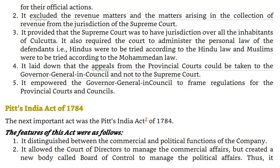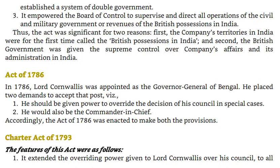Pitt's India Act of 1784. Its features were: 1. It distinguished between the commercial and political functions of the Company. 2. It allowed the Court of Directors to manage commercial affairs but created a new body called the Board of Control to manage political affairs, thus establishing a system of double government. 3. It empowered the Board of Control to supervise and direct all operations of the civil, military, and revenue affairs of British possessions in India. Thus, the Company's territories were for the first time called 'British possessions in India,' and the British government was given supreme control over the Company's affairs and administration in India.